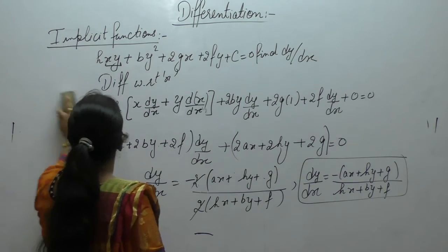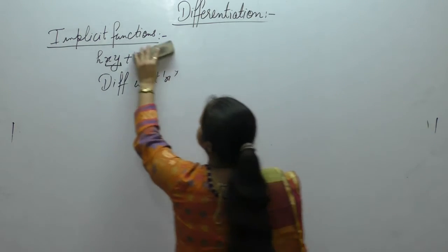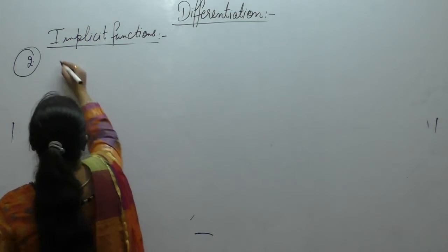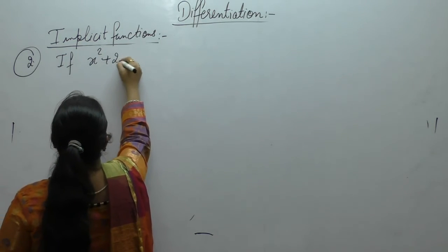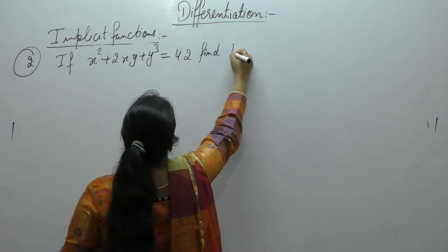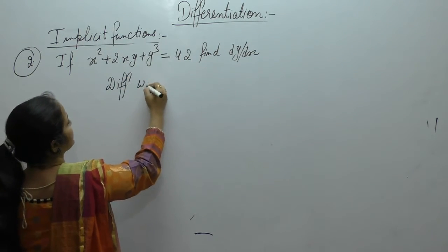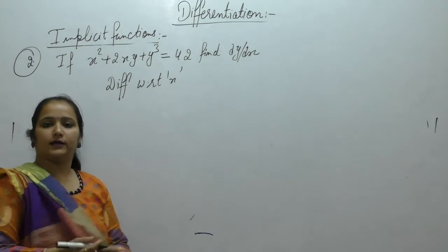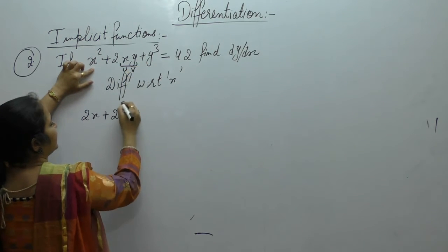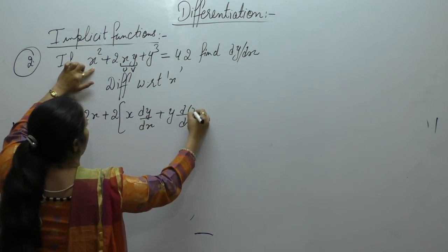Now the next one. If x² + 2xy + y³ = 42, find dy/dx. Differentiate this function with respect to x. Derivative of x² using the power formula is 2x. For the 2xy term, apply the u·v rule: first function as it is, derivative of second, plus second as it is, derivative of first.